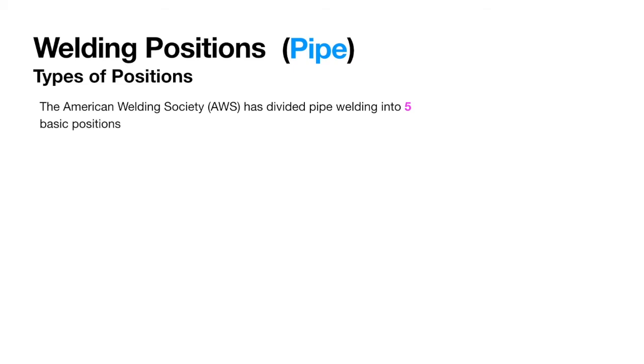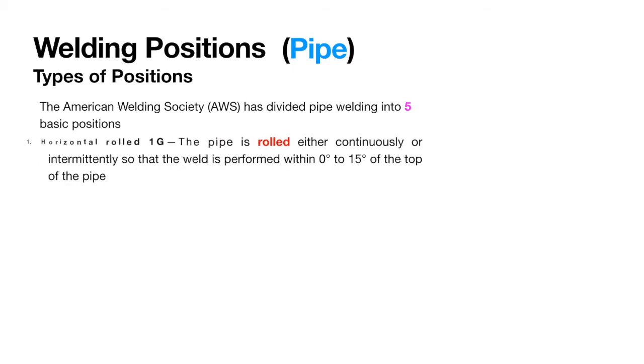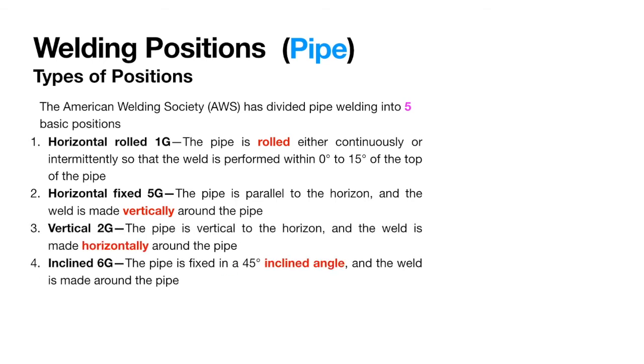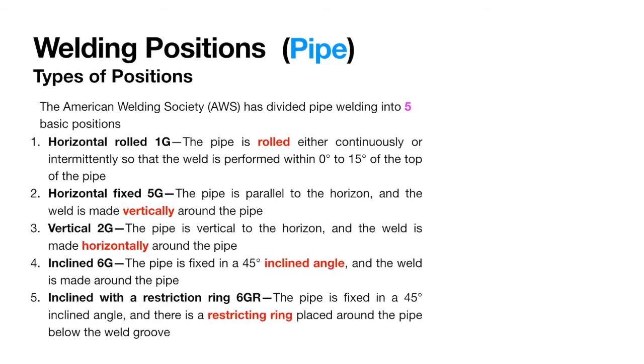These five positions are horizontal roll 1G, horizontal fixed 5G, vertical 2G, inclined 6G, and inclined with a restriction ring 6GR.